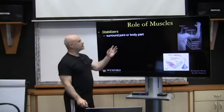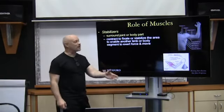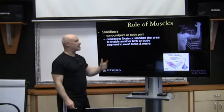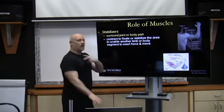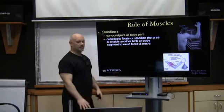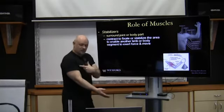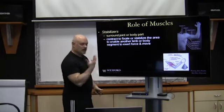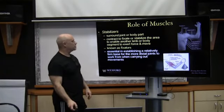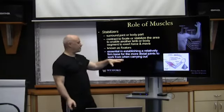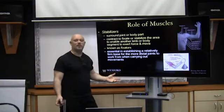What about stabilizing muscles? They surround the joint or particular body part and contract to fixate or stabilize the area to enable a limb or body segment to exert force or move. When doing an elbow flexion, the shoulder joint is stabilized so we can cause the desired action. All those muscles stabilize one joint so we can have movement at the distal end. These are known as fixators, and they're essential for establishing a relatively firm base for the more distal joint to work when carrying out specific movements.